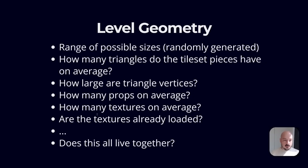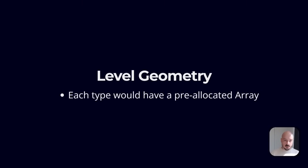We can ask: does all this live together? If the answer is yes, then we can do one thing. If the answer is no, then we split this further and further until we come up with a bunch of things that all live for the same lifetime. In that case, we probably have a bunch of pre-allocated arrays for our level geometry, with each type having a fixed size that's the maximum amount of those things that could exist in one level.